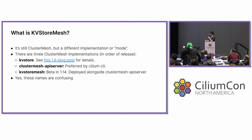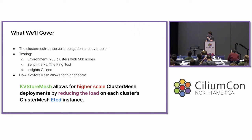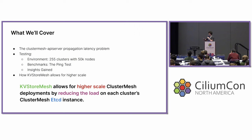KVStore Mesh is a feature as a part of Cluster Mesh that's beta in 1.14, and it's deployed alongside what's called the Cluster Mesh API server. The Cluster Mesh API server is the main component deployed with Cluster Mesh that allows you to enable that cross-cluster functionality. There is also KVStore, but this has nothing to do with KVStore Mesh — so this is a little confusing, but we'll bear with it. In this talk, we're going to cover the Cluster Mesh API server propagation latency problem, some testing we did to explore this problem, and how KVStore Mesh allows for higher scale. Our big thesis statement for the day is that KVStore Mesh allows for higher scale Cluster Mesh deployments by reducing the load on each cluster's Cluster Mesh etcd instance.